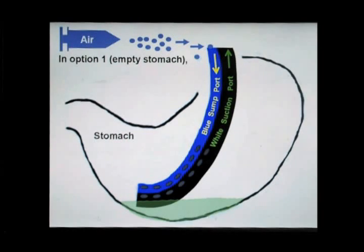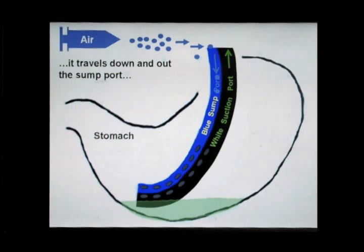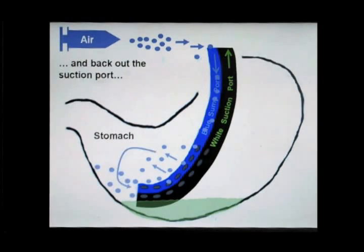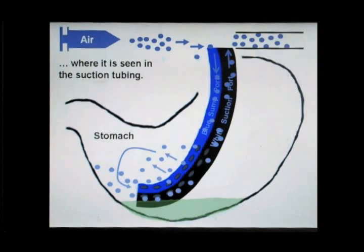In option one, air injected into the sumping port of the NG tube travels down the tube into the lumen of the stomach and then is suctioned back out the suction port where it is seen in the suction tubing going to the wall.